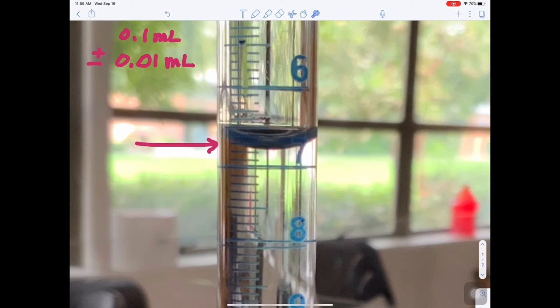So if we look at this, we see that it's between the 7 and the 6. That means it's 6 point something. So 6 point.